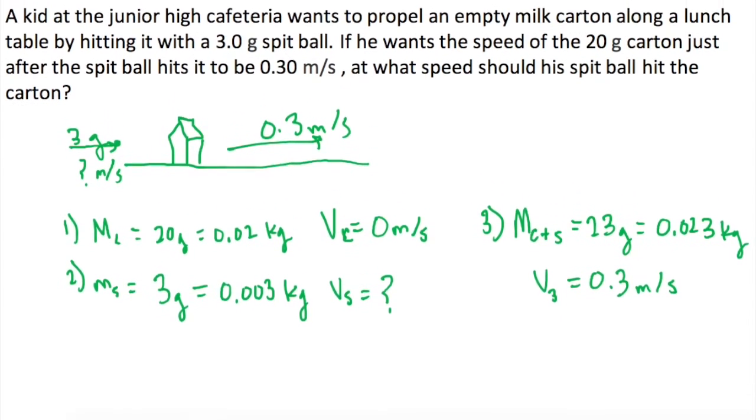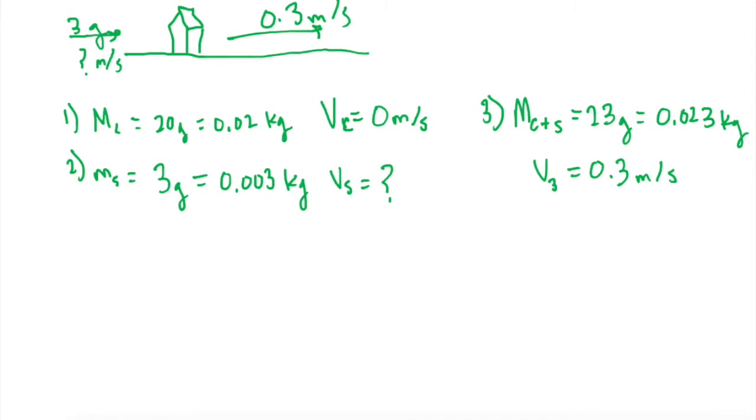This is an example of M1 V1 plus M2 V2 equals M3 V3. In this case, we're looking for V2.